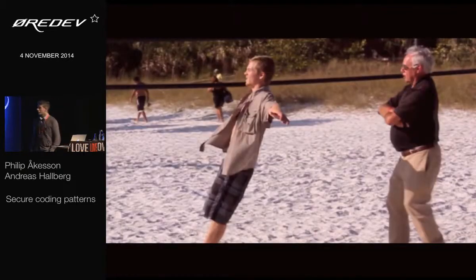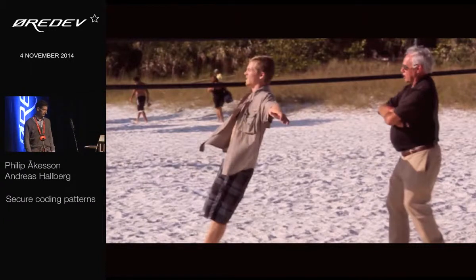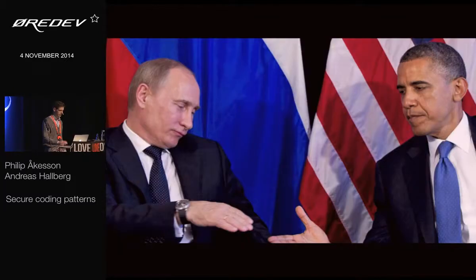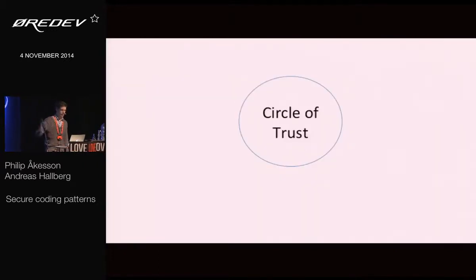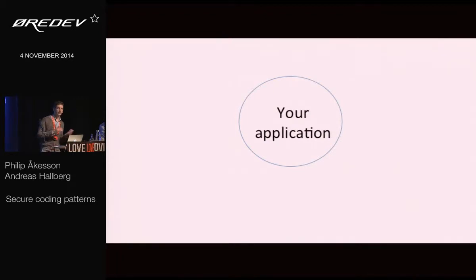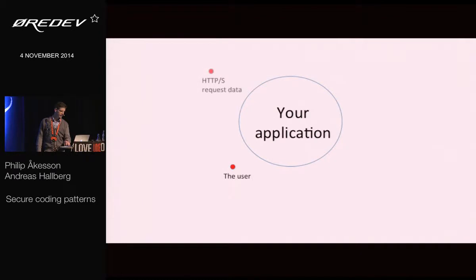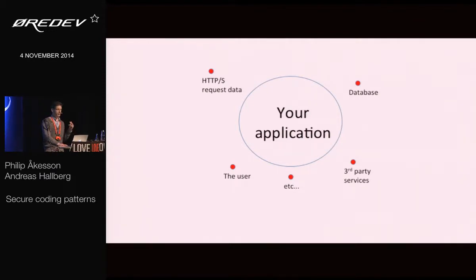Trust. Trust is an important concept in secure coding. It can be really tricky to know who to trust. How do we control who we trust? How do we establish trust? A lot of security issues in code boil down to a poor understanding of how we place our trust, or where our software places its trust. You've seen this circle of trust, illustrated by a circle, and this concept applies very well to secure development.